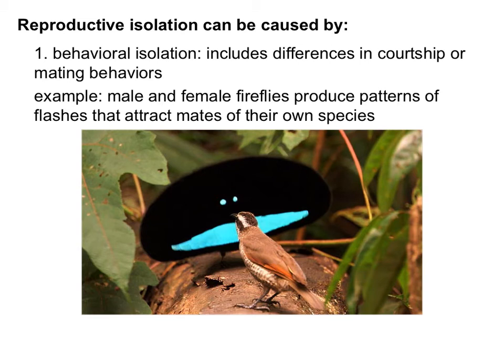There are several types of reproductive isolation. The first is behavioral isolation, which includes differences in courtship or mating behaviors. Due to different behaviors, certain members of the population might only want to mate with others like them. An example is male and female fireflies producing patterns of flashes that attract mates of their own species. This image shows courtship that birds do — if you search bird of paradise mating dance on YouTube, you'll see this bird jump around and make clicking noises to attract a female.